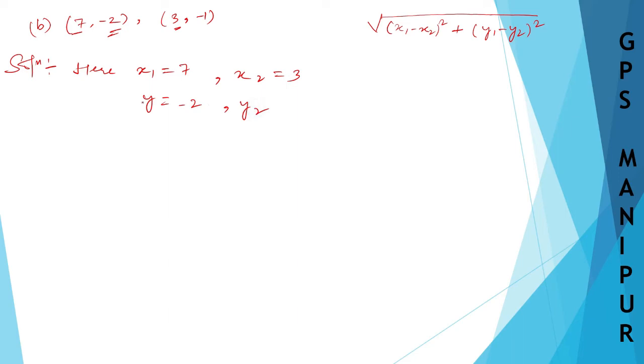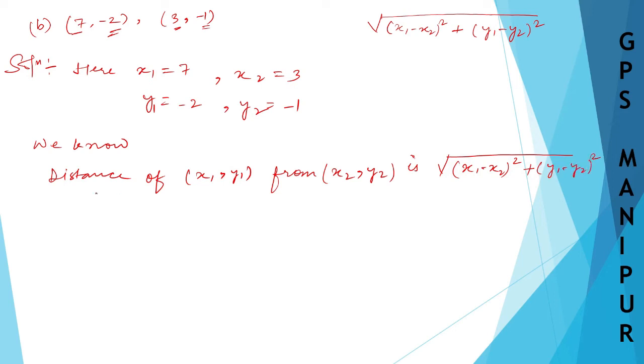And y2 is equal to this second number, that is -1. We know that distance of (x1, y1) from (x2, y2) is square root of (x1 minus x2) whole square plus (y1 minus y2) whole square. So therefore,